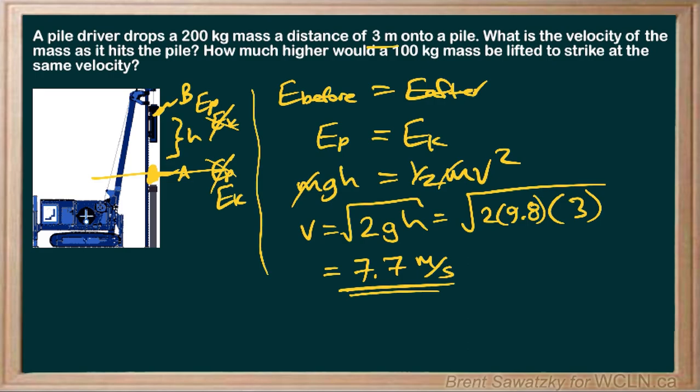Let's go back to this step here and make sure we understood what happened. When we crossed out the mass at this point, we're saying that it doesn't matter what the mass of this pile driver has on it - it's going to reach the same velocity by the time it hits that pile.